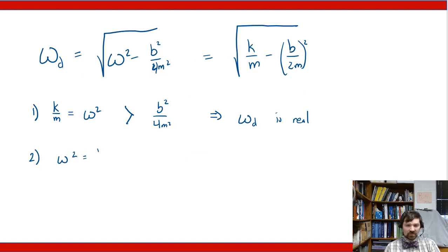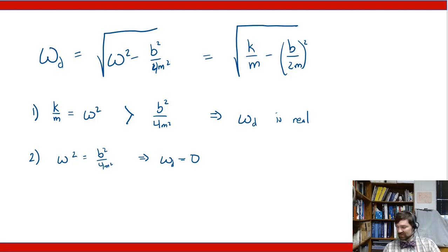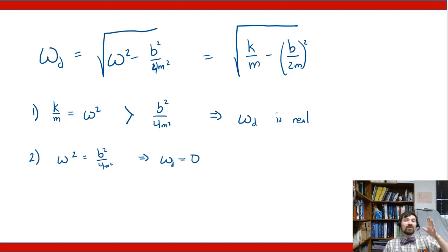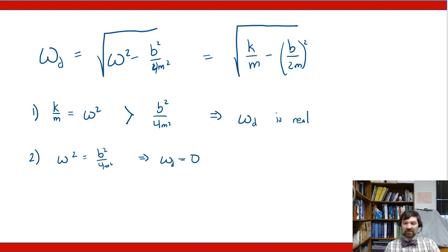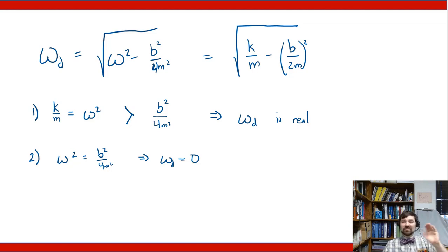Second case: if omega squared equals b squared over 4m squared, then omega_d equals zero. This is called critical damping — the system just tends to go to equilibrium and stop. That's analogous to a door with a lever closer that, when you let go, slowly swings shut without rebounding. Underdamping, by contrast, is like a door that slams shut, rebounds, slams again, rebounds again, each time getting weaker — that's underdamped.